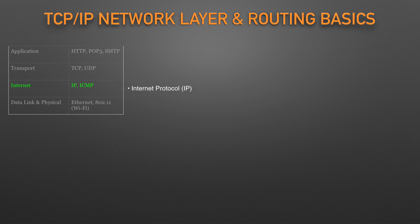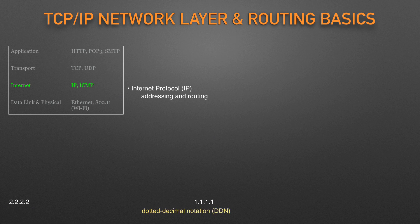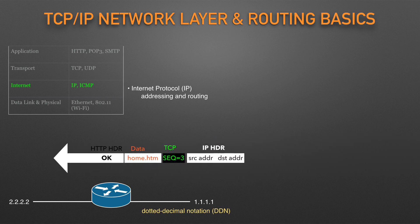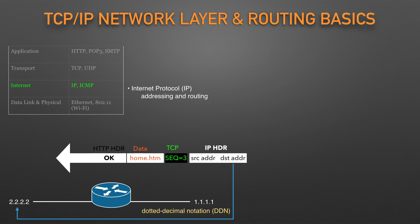The TCP/IP network layer includes a small number of protocols, but only one major protocol is important right now: the Internet Protocol, IP. IP provides several features, most importantly addressing and routing. Each IP address has four numbers separated by periods — this style of number is called dotted decimal notation, DDN. Routers are networking devices that connect the parts of the TCP/IP network together for the purpose of routing IP packets to the correct destination. They receive IP packets on various physical interfaces, make decisions based on the IP address included with the packet, and then physically forward the packet out some other network interface. Using the IP protocol, the network layer provides a service of forwarding IP packets from one device to another.